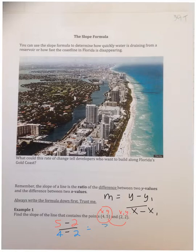5 minus 2 is 3. 4 minus 2 is 2. So your rate of change, your slope, is 3 over 2. Keep it as 3 over 2. Don't change it to 1.5 because it's just going to make it harder down the road.